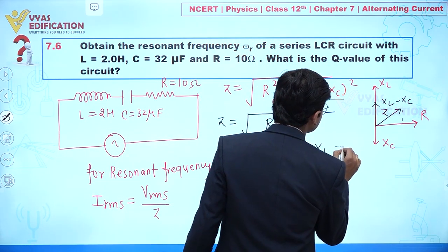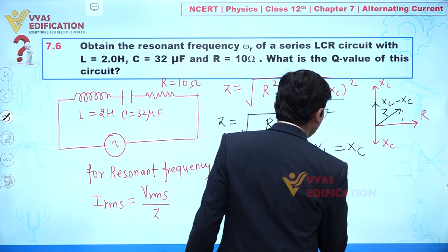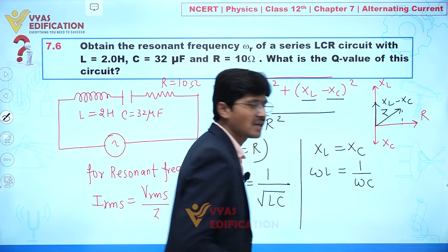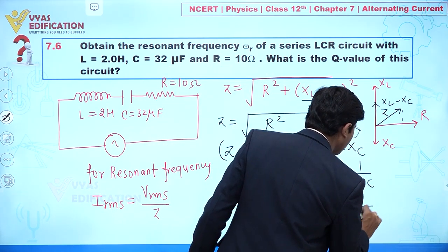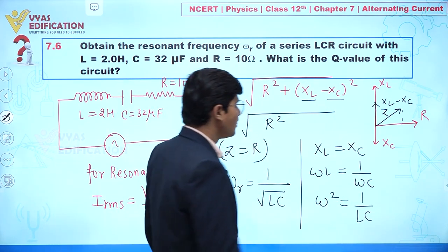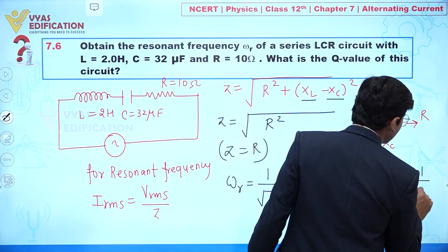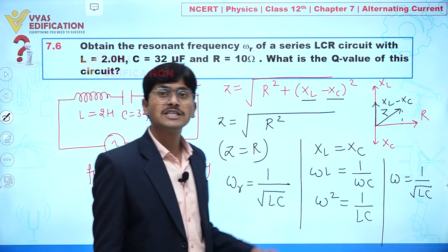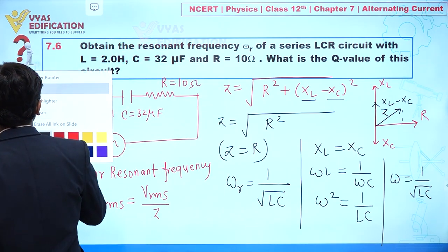We get this formula because at resonance XL equals XC. XL is given by omega times L, and XC is given by 1 over omega times C. Setting them equal: omega² equals 1 over LC, so omega equals 1 over the square root of LC. This omega is the resonant frequency.